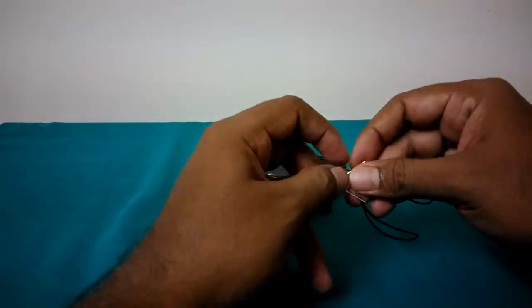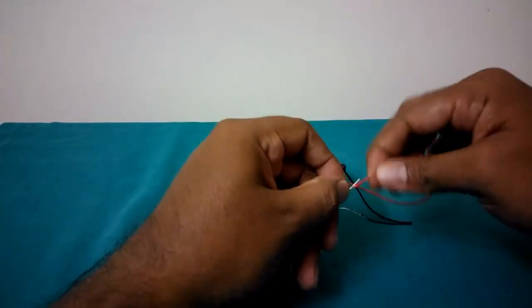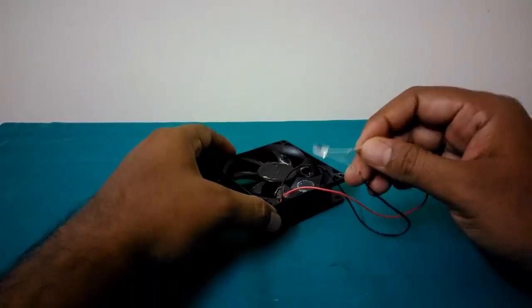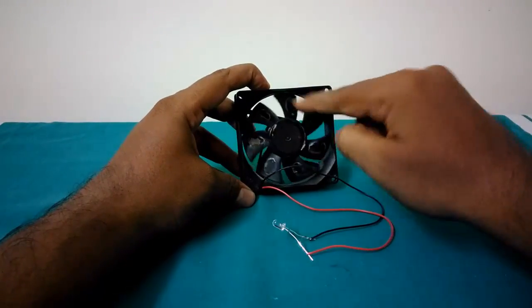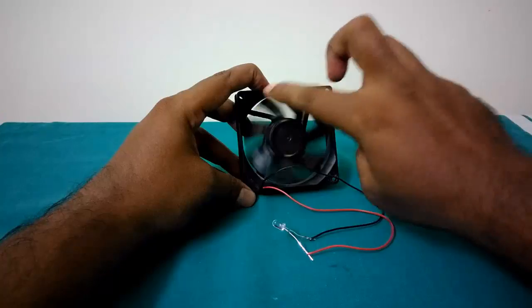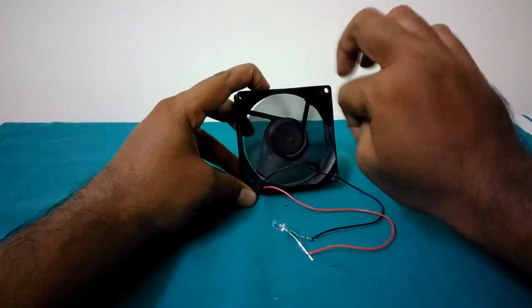Let me connect LED bulb directly to the CPU fan. If CPU fan can be a generator, the LED light should glow up when we rotate the CPU fan. But it is not.